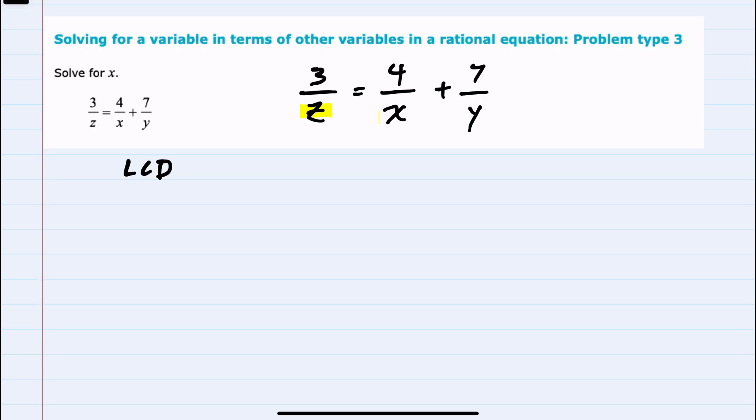So looking at each of these denominators, our lowest common denominator would have to have a z, an x, and a y.